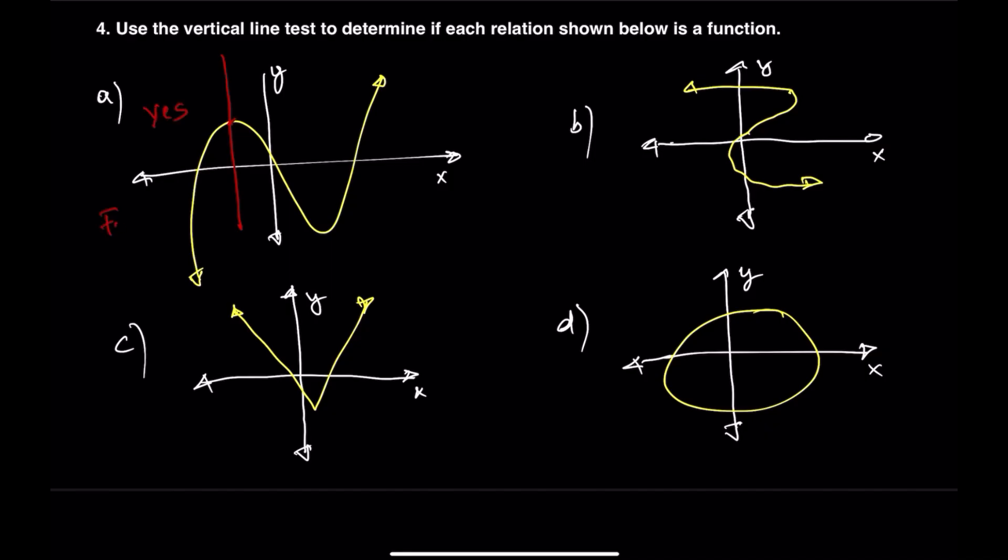Now let's move on to the second graph, which is on the right. When we draw a vertical line, we notice that it touches the graph in three different places. Since one vertical line intersects the graph more than once, this relation does not represent a function.